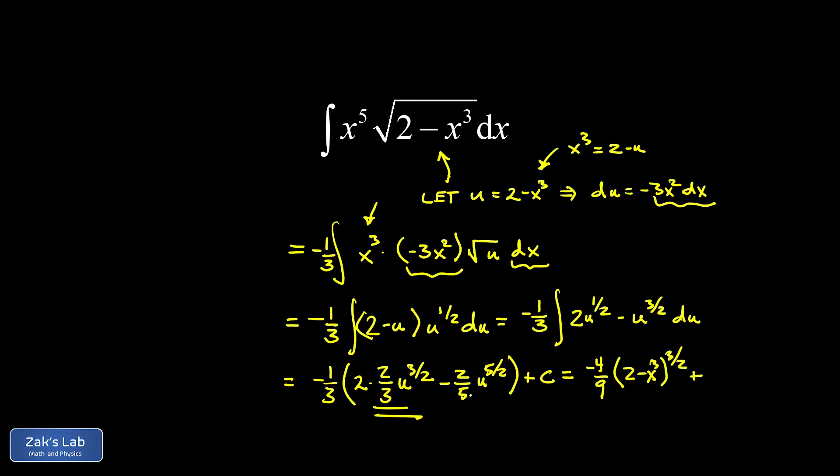That's two fifteenths out in front when I distribute my negative one third. So I have plus two fifteenths u to the five halves. But u again is two minus x cubed, so two minus x cubed to the five halves, and a plus c.